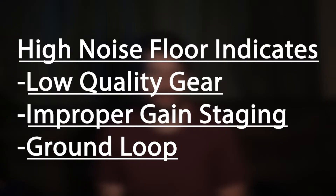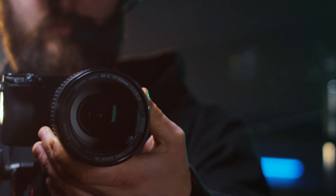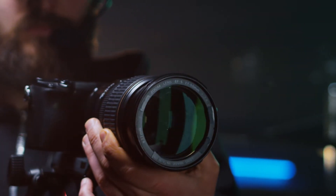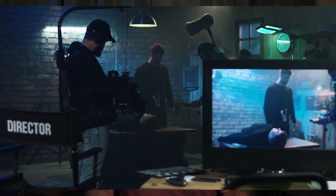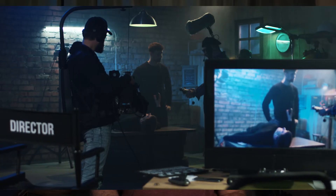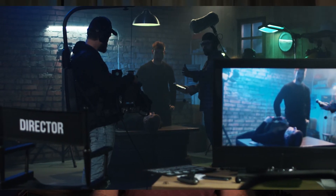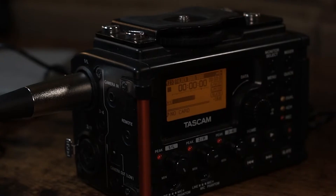A high noise floor or self noise can indicate low quality gear, improper gain staging, or even a ground loop. For example, using the built-in recorder of a camera is generally a bad idea. This is used mostly for reference when recording video and should not be used in final production except in emergencies.